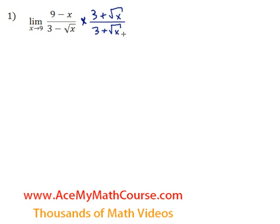And where did this come from? Well, this is the conjugate of 3 minus the square root of x. I hope you guys remember your perfect squares. x squared minus y squared factors into x plus y times x minus y. x plus y and x minus y are conjugates.